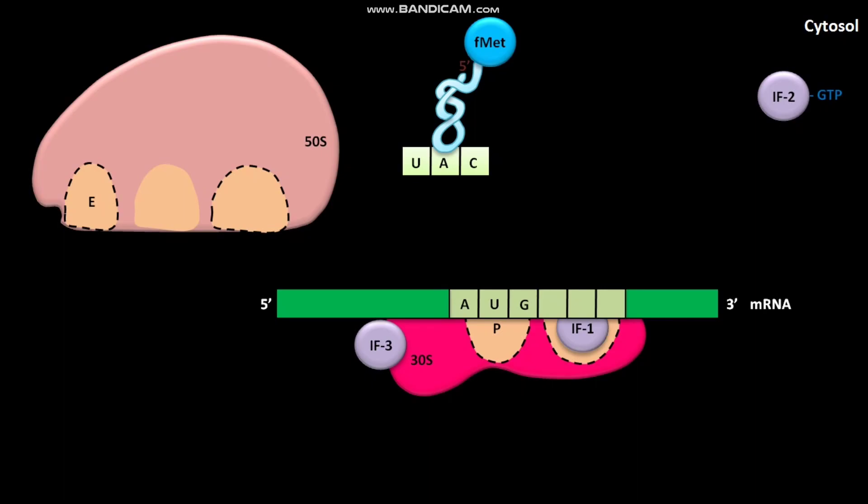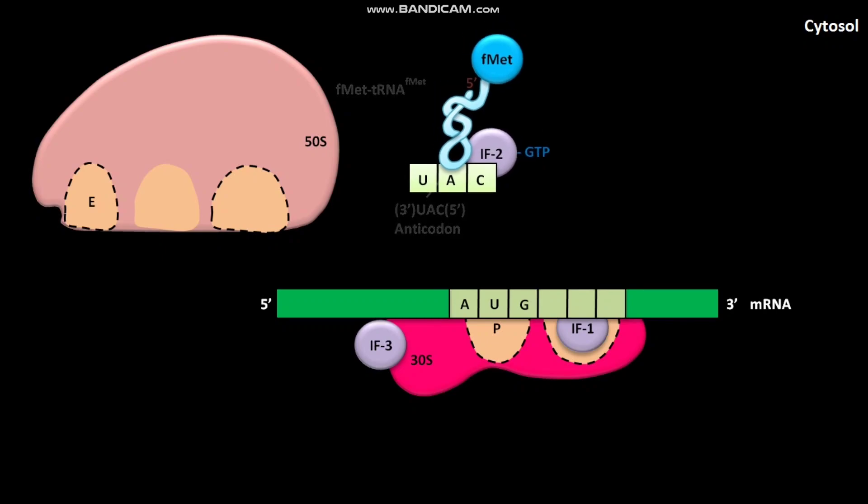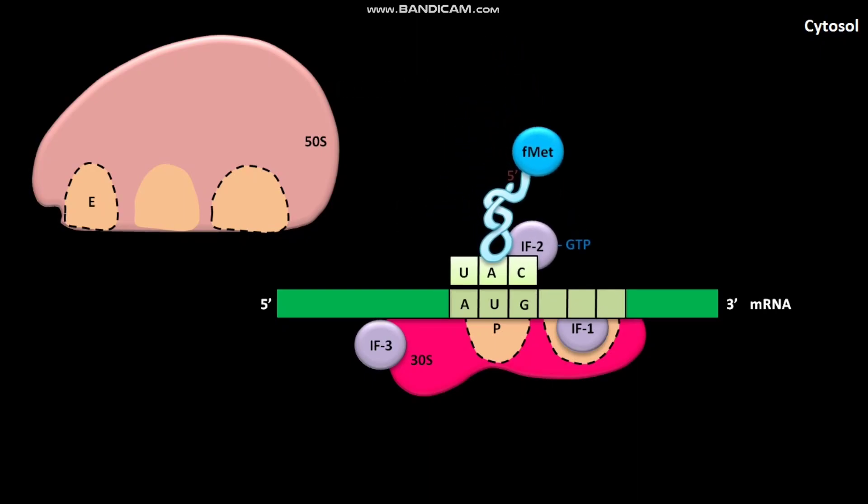The fMet-tRNA has UAC anticodon. After the binding of mRNA to the 30S subunit, IF2-GTP binds to the fMet-tRNA. The IF2-GTP bound to fMet-tRNA then binds to the P site of 30S subunit. In the P site, the UAC anticodon of tRNA base pairs with AUG initiation codon of mRNA.